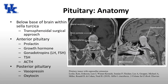Starting with the anatomy of the pituitary gland, the pituitary gland is located below the base of the brain within a bony structure called the sella turcica. Because of this location within this bony structure, the most commonly used surgical approach is going to be a transsphenoidal surgical approach, so basically through the nose.